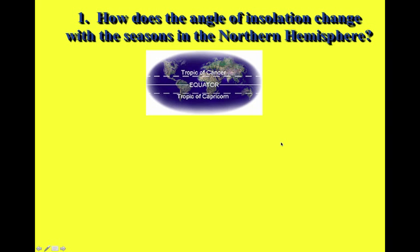The first thing we're going to talk about is how the angle of insolation changes with the seasons in the Northern Hemisphere, which is of course where we live. Looking at this globe, we're looking at the equator, the Tropic of Cancer, and the Tropic of Capricorn. The Tropic of Cancer is at 23.5 degrees north, and the Tropic of Capricorn is at 23.5 degrees south — and we'll talk about why that's an important number.